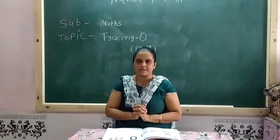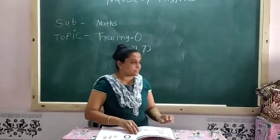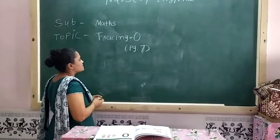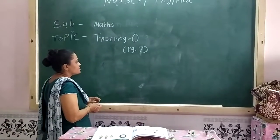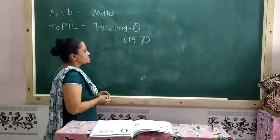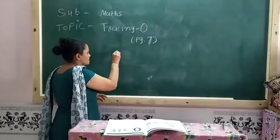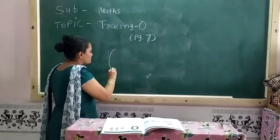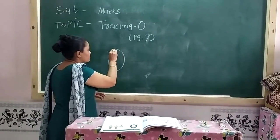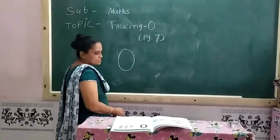Everybody, open your eyes. Today's subject is Maths, the topic is Tracing Zero, page number 7. We are going to ask: which number is 0? The number means nothing.